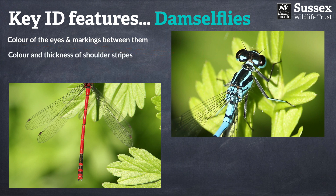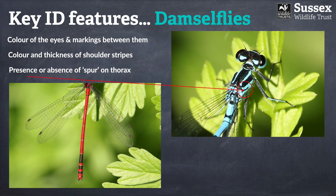Similar to dragonflies, looking at the thorax is once again really important. In this case it's really the colour and thickness of the shoulder stripes, also known as the anti-humeral stripes. In the case of this azure damselfly, you can see the blue stripes are substantially thinner than the black stripes that surround them. It's also worth noting whether the damselfly has a little spur on the side below the shoulder stripes — this is a really pivotal identification feature, but it can be really hard to see because so many of our damselflies are just so small. You'll need to have your head pretty close to the damselfly to see this.